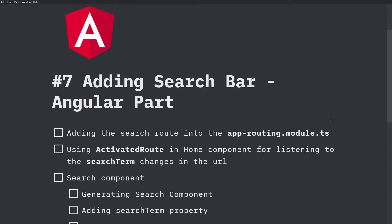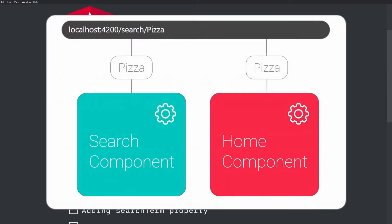The first thing we want to do right now is add the search route into the app routing module. We want to be able to get the search term from the route in all of our components. Let's do it.